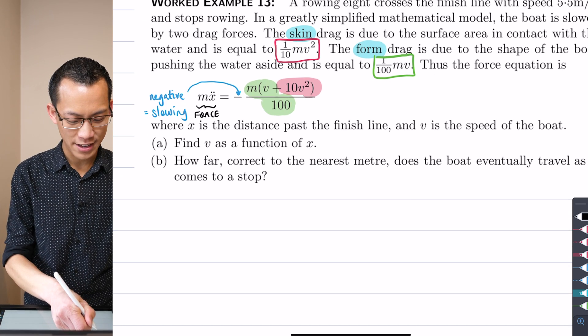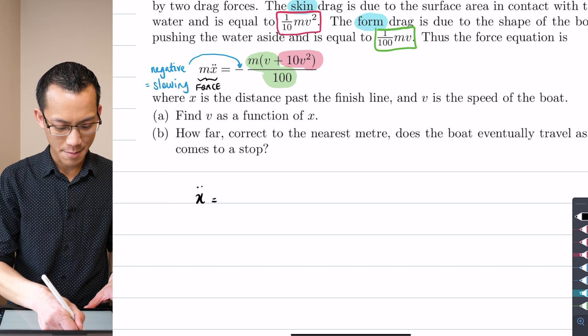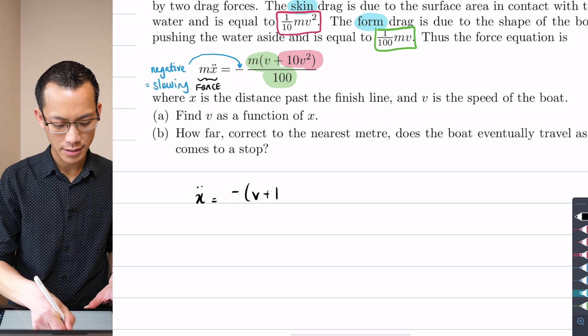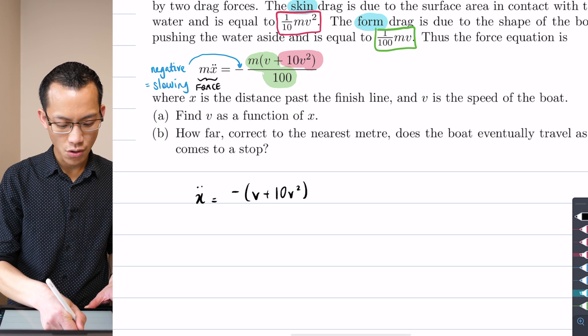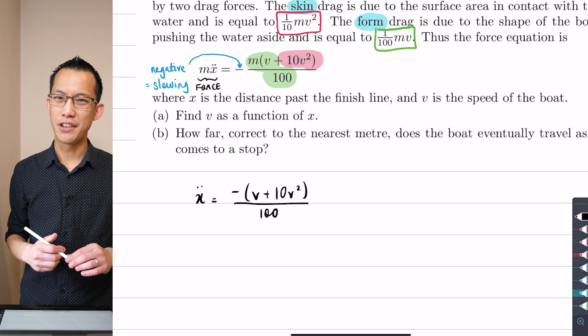So I'm just going to divide through and that gives me x double dot, there's my acceleration, equals minus v plus 10v squared on the numerator and then I've got 100 on the denominator. Okay so far so good.